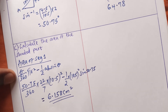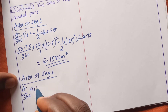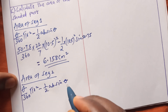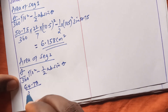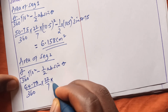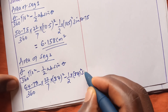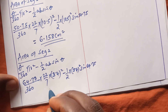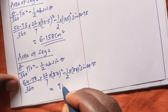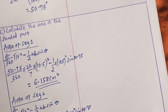For the area of segment two, we apply the same formula: (θ/360) × π r² minus (1/2) a b sine θ. With θ = 64.78°, radius 8.4 centimeters, and sine of 64.78°, putting this in the calculator gives us 7.989 square centimeters for the area of segment two.